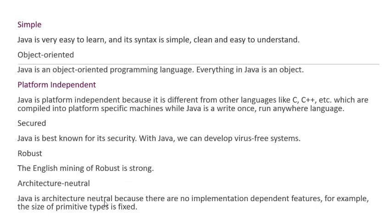Architecturally neutral — Java is architecturally neutral because there are no implementation-dependent features. For example, the size of the primitive type is fixed. In C or C++, we have data types like integer (2 bytes) and float (4 bytes). But in Java, the size does not depend on any implementation feature. The integer data type in Java is 4 bytes instead of 2 bytes. It does not depend on architecture — it has a fixed value.